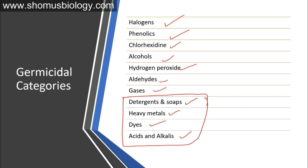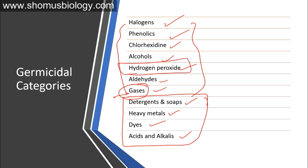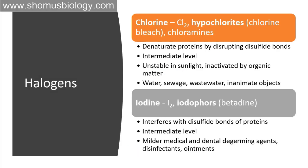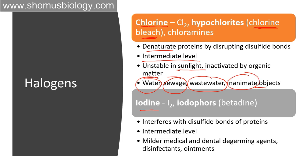Starting with halogens — chlorine and iodine. Chlorine hypochlorites, simply used as chlorine bleach, denature proteins by disrupting disulfide bonds. It is of intermediate level, unstable in sunlight, and inactivated by organic matter. It can be used to sterilize water, sewage, wastewater, and inanimate objects.